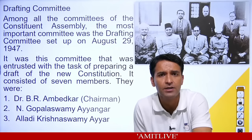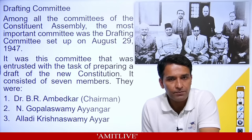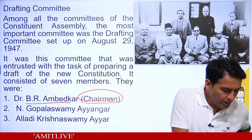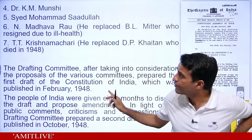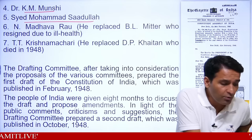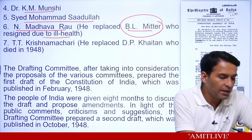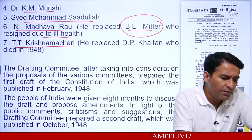N. Madhav Rao was the final member — originally B.L. Mitter was there but he resigned, so N. Madhav Rao replaced him. And T.T. Krishnamachari was another final member who replaced D.P. Khaitan, who had passed away. So these seven people were the Drafting Committee, and they made the constitution.